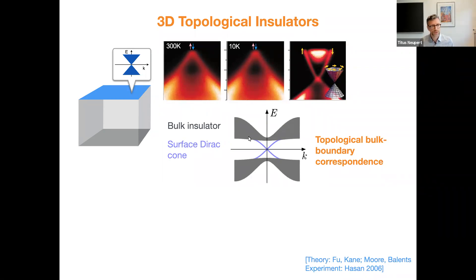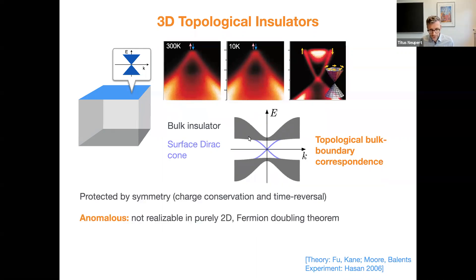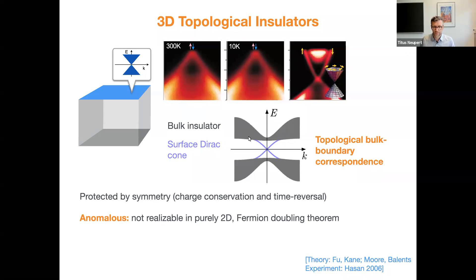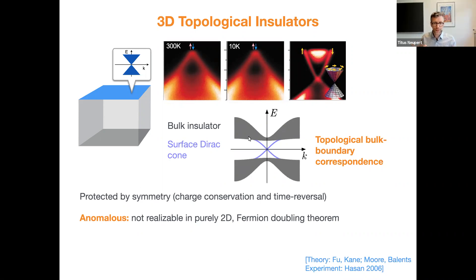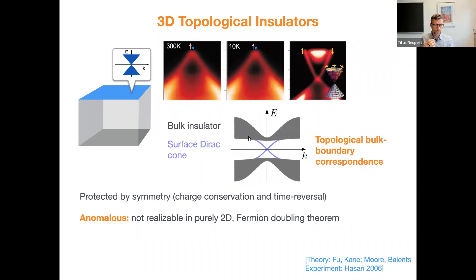This surface state can be predicted from just knowing the bulk electronic structure. It has two important features: it's protected by symmetry — specifically charge conservation and time reversal — and it is anomalous in that it really relies on having this three-dimensional topological bulk. In a purely two-dimensional system with time reversal and charge conservation, one would not be able to realize just a single Dirac cone. In topological systems, the boundary has some anomalous feature like this single Dirac cone.